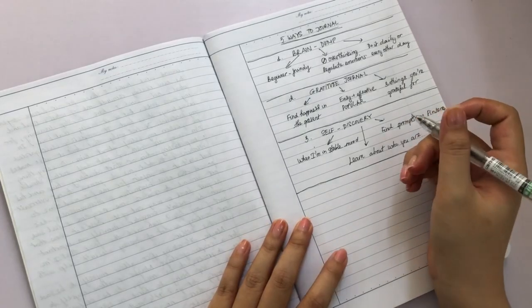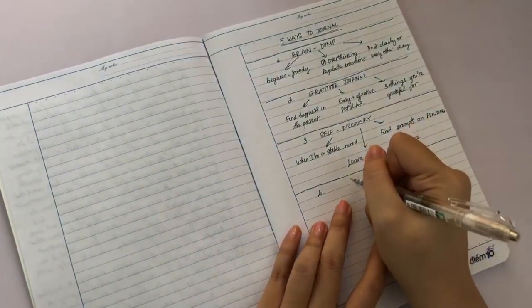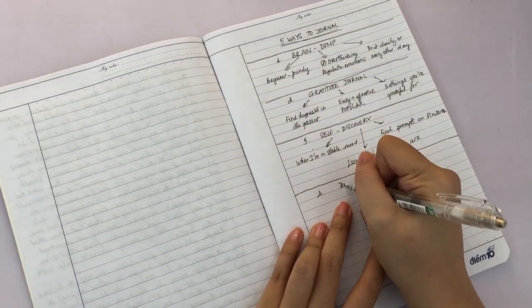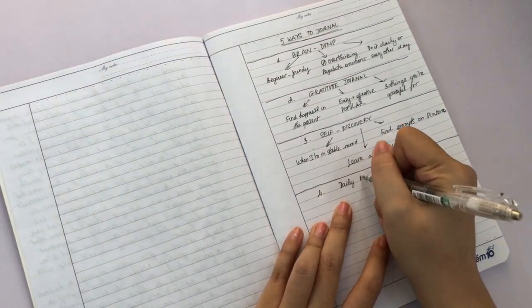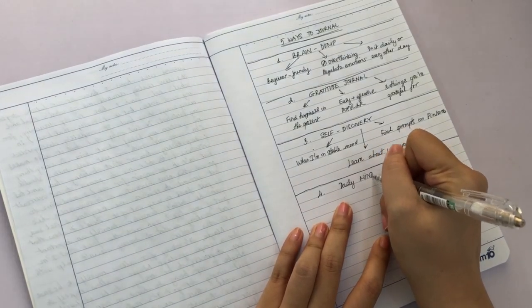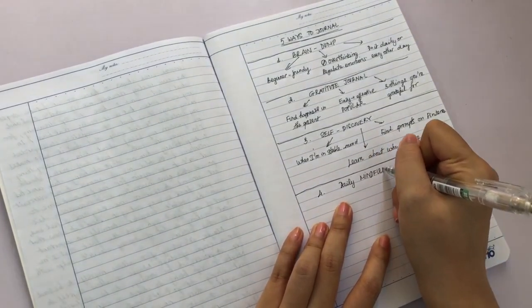The fourth kind of journal that I want to introduce in today's video is the daily mindfulness journal. I feel like mindful journaling is kind of a combination between gratitude journal, brain dump, self-reflection, but on a more positive note.